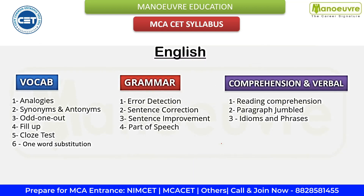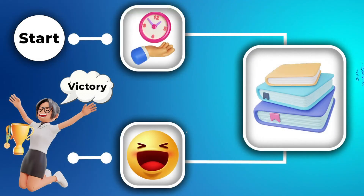Next is English Comprehension and Verbal Ability. This section consists of vocabulary, grammar, comprehension and verbal topics. This section tests your proficiency in the English language. Focus on improving your vocabulary, grammar and reading comprehension skills, and practice various types of questions. Understand concepts with the help of Manure Education MCA entrance preparation books. I'd also recommend reading books, newspapers and articles regularly to improve your skills. Overall, it is important to manage your time effectively during preparation, and this is only possible if you have access to the right preparation resources.